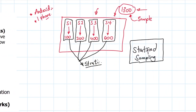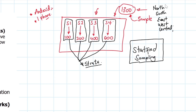Here the strata are based on classes, but we could also divide this population by where they come from — northern, southern, eastern, western, or central parts of the country. The method you use depends on what you think is applicable. For this case we have divided them in terms of classes.